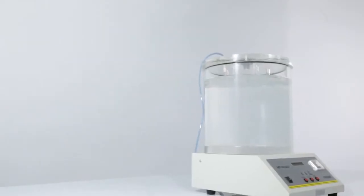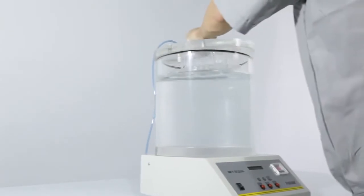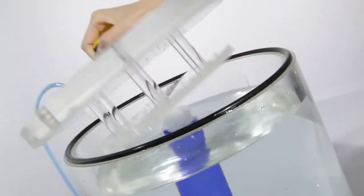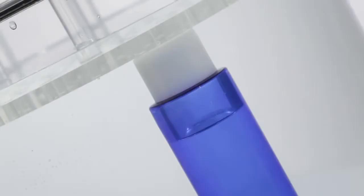MFY01 works by creating a vacuum in the test chamber to create a pressure difference between the inside and the outside of the specimen.